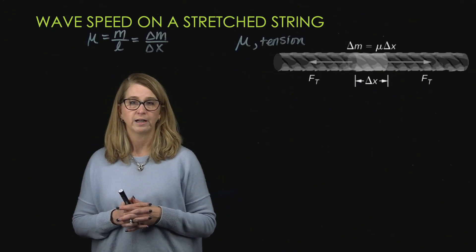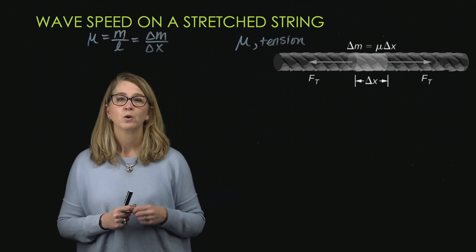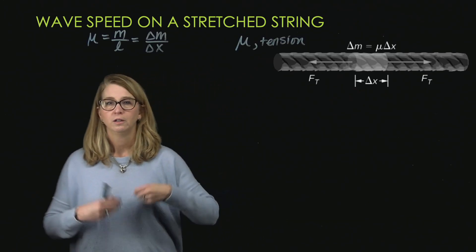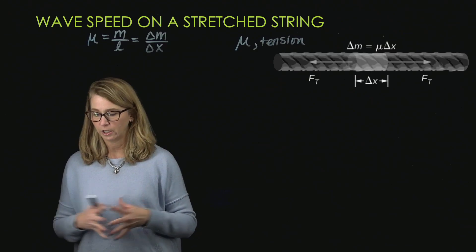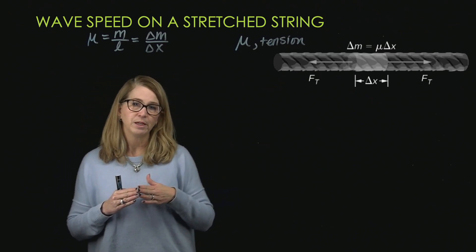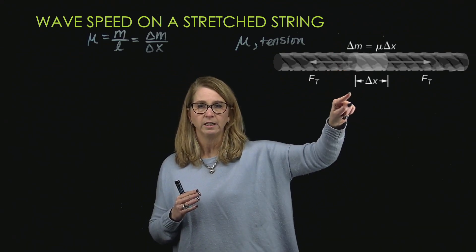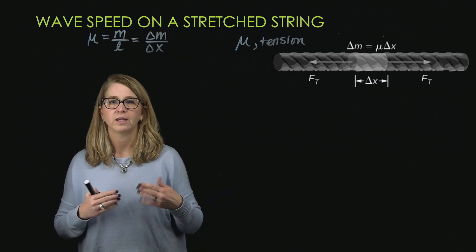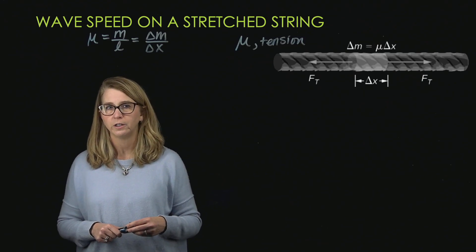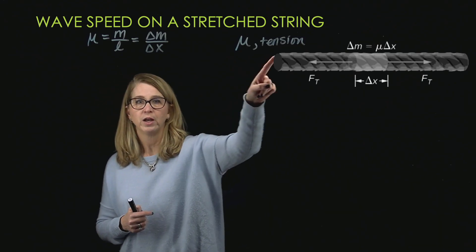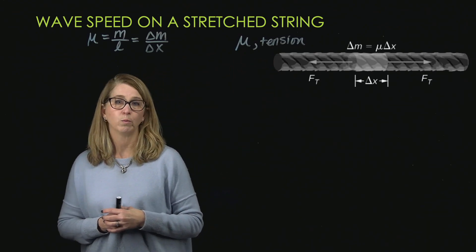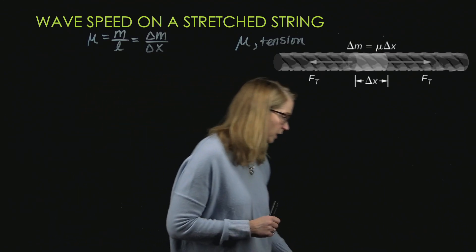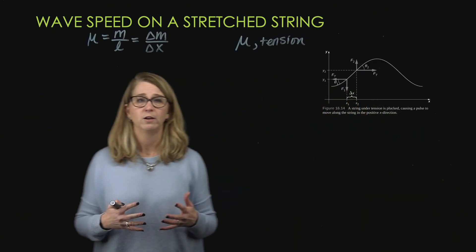Now if we pluck the string, we create a disturbance that's perpendicular to the length of the string itself — that's how you make a sound. We're disturbing it in the y direction, but the wave will travel in the x direction. What we want to determine is how the speed of that wave depends on these characteristics — the mass per unit length and the tension in the string.